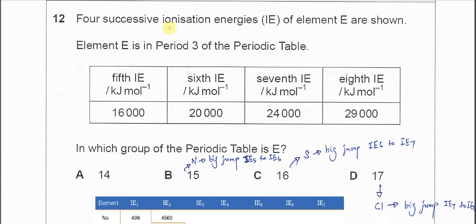Four successive ionization energies are given: IE5, IE6, IE7, and IE8. The question asks which group of the periodic table element E belongs to. This element has four successive ionization energies. Let's say this one is group 15.